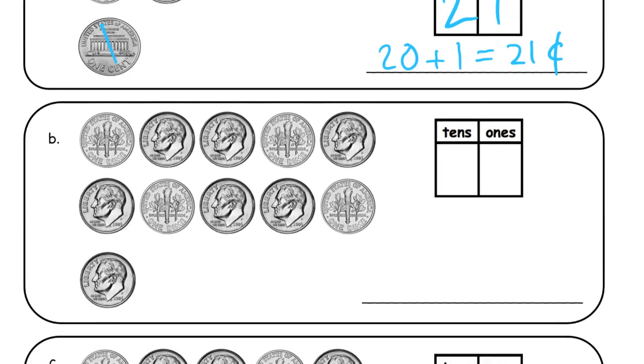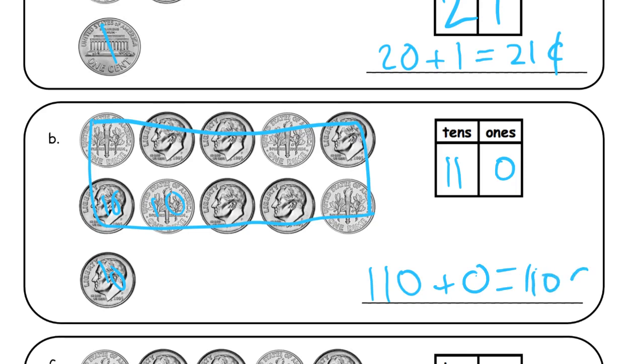And now here we have a 10 group of 10, a 10 group of 10s, and then here's another 10 right here. Dimes are all 10s. So we have how many 10s? There's 10 plus 1 more. That's 11 10s. There aren't any pennies, so 0 1s. So we have 110 cents in dimes plus 0 pennies equals 110 cents.